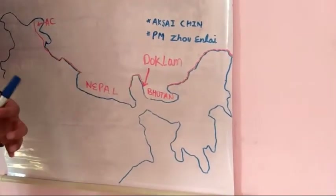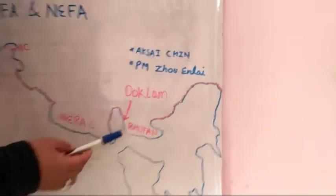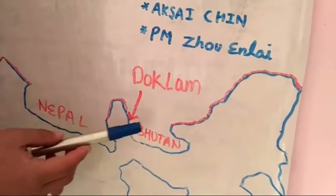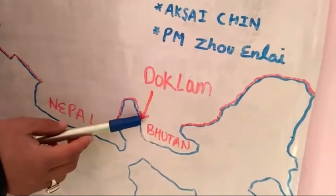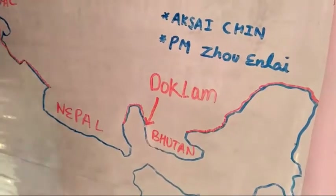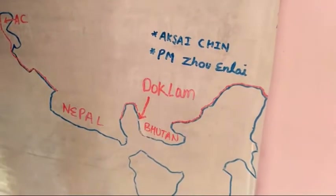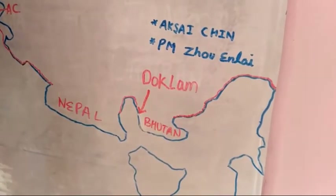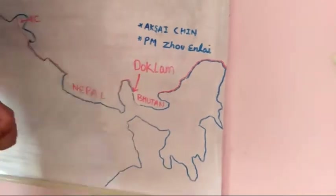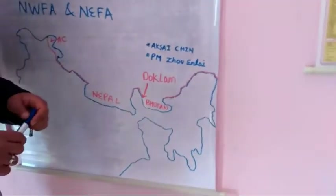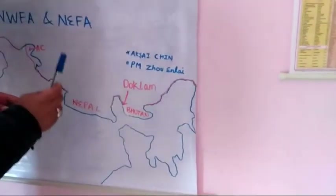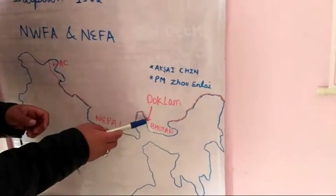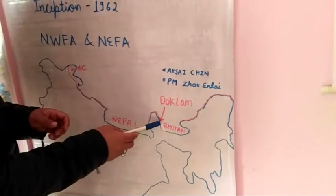There was also the Doklam issue. Doklam is basically a tri-junction that lies between Bhutan, Sikkim, and China. This conflict took place in June 2017 and lasted for over 73 days, and was finally resolved by bilateral talks between both countries. NSA Ajit Doval represented India in Beijing regarding the Doklam issue, and it was resolved.